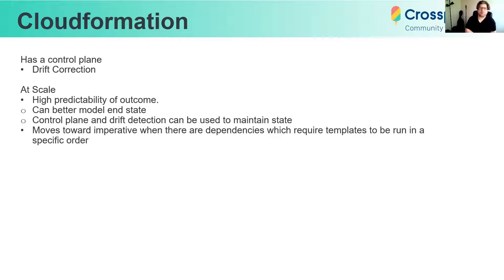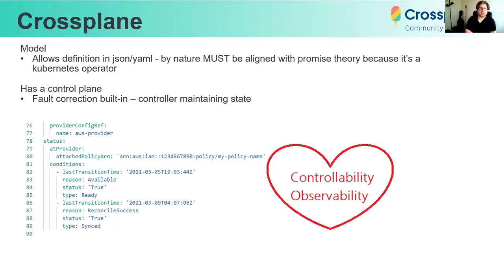We still have the challenge, though, when we have many CloudFormation stacks with dependencies and specific orders — that it becomes imperative. Crossplane allows definition in JSON or YAML, and by nature must be aligned with promise theory because it's a Kubernetes operator — very, very close to the literal interpretation of promise theory. Because it has a controller, it can maintain our state. So as you can see in my example, we have controllability, observability, and the controller ensures that we're in our expected state.